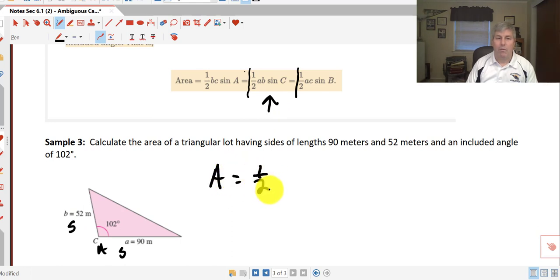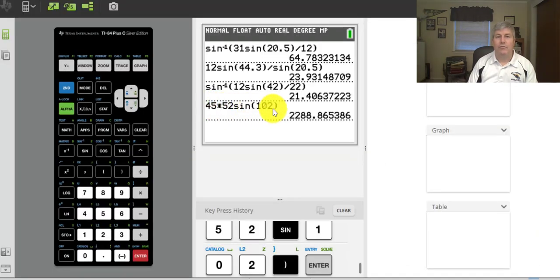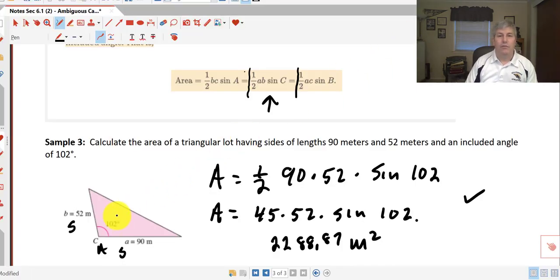So our area equals one half of 90 times 52 times the sine of 102°. So our area equals 45 times 52 times the sine of 102°. We can simply put that in our calculator as 45 times 52 sine of 102°. And I get 2,288.87 meters squared. It is possible using our trigonometry and that formula to find the area of a triangle that is not a right triangle.